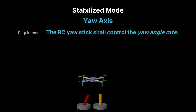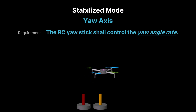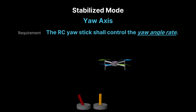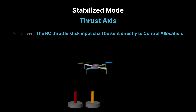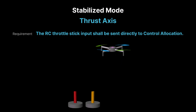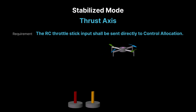In stabilized mode, the RC stick controls the quadcopter's yaw angle rate, allowing the operator to rotate the drone left or right around its vertical axis. The RC throttle stick input is sent directly to the control allocation subsystem, which we will discuss in a later session. The throttle input adjusts the power to control the quadcopter's vertical maneuver, determining the drone's ascent or descent while the autopilot maintains stability.